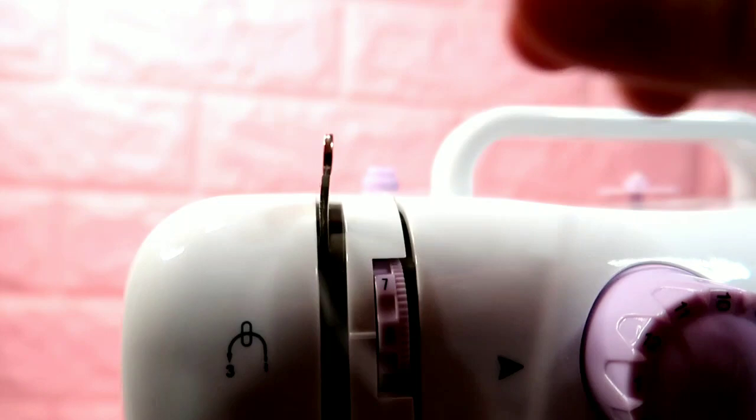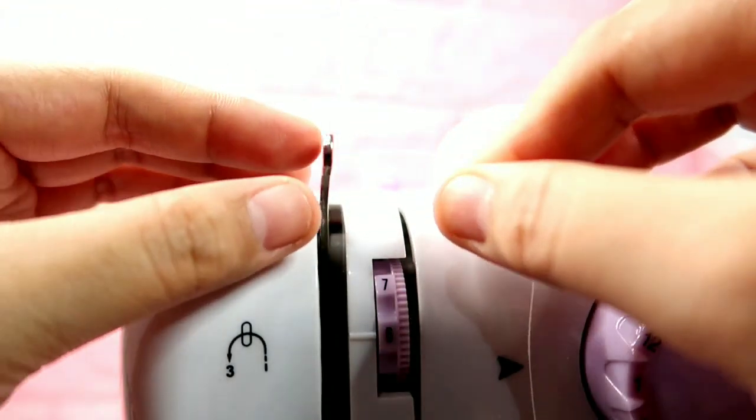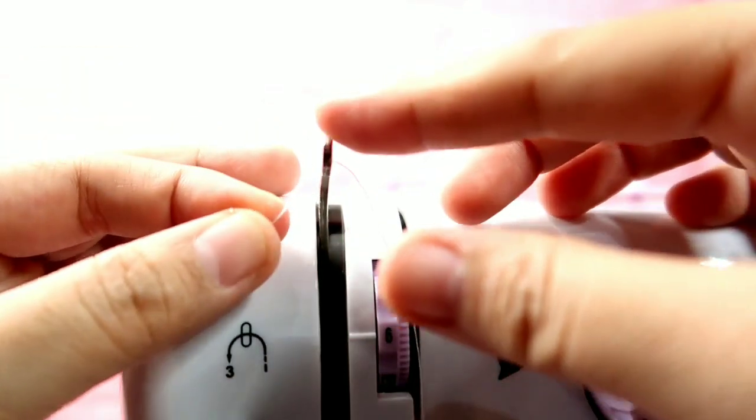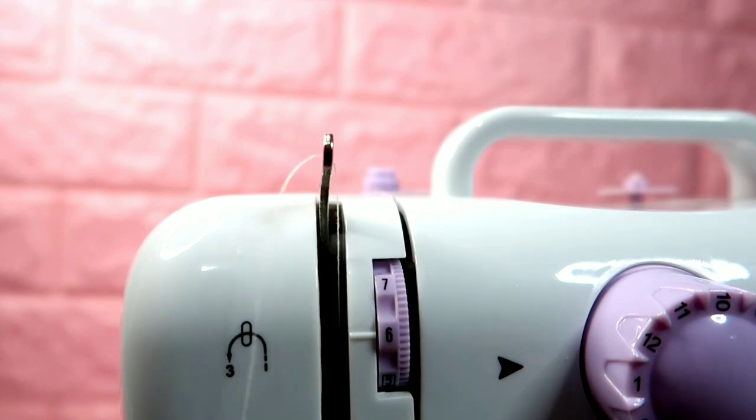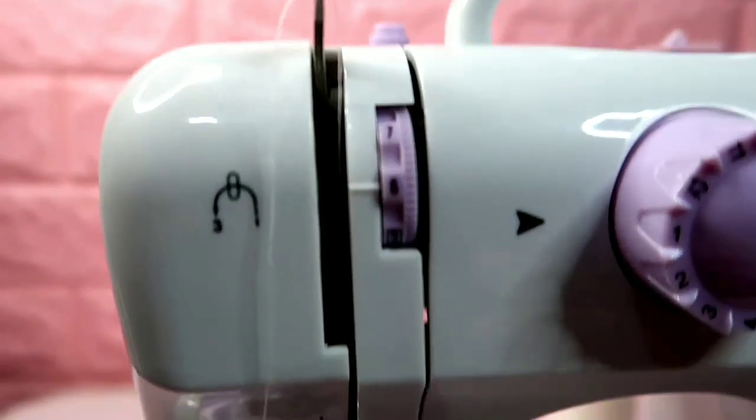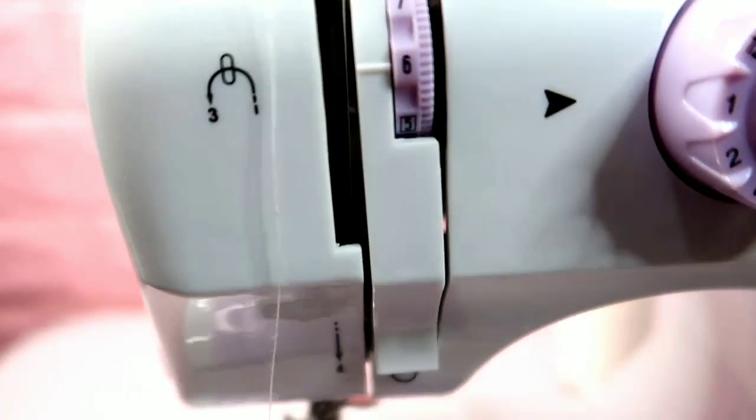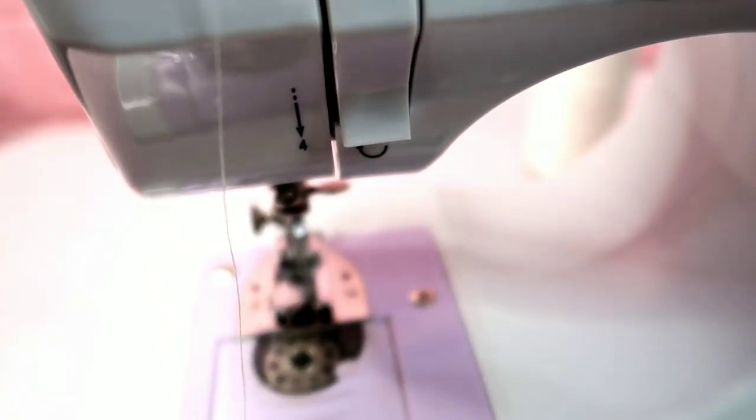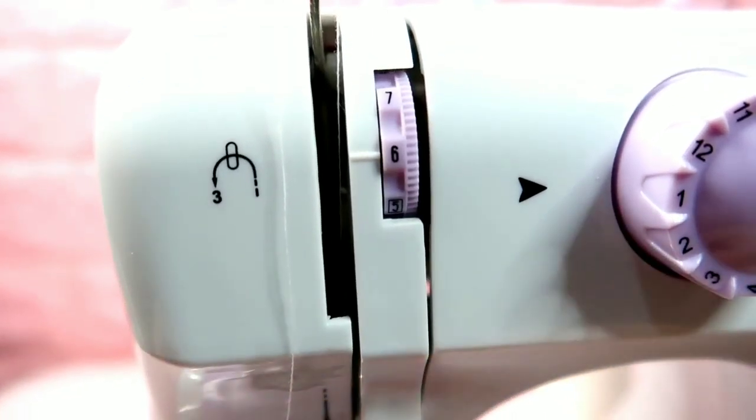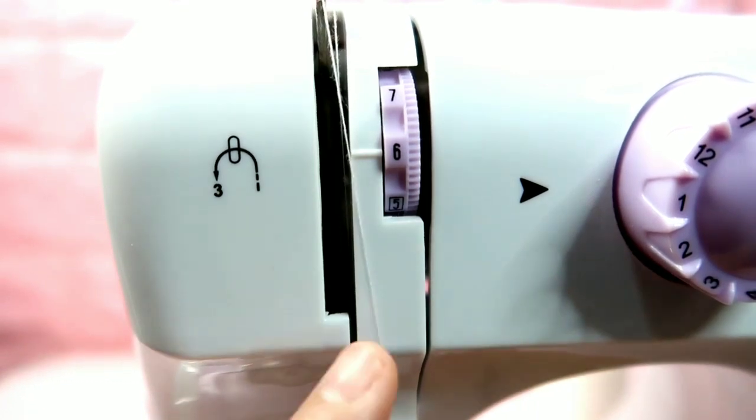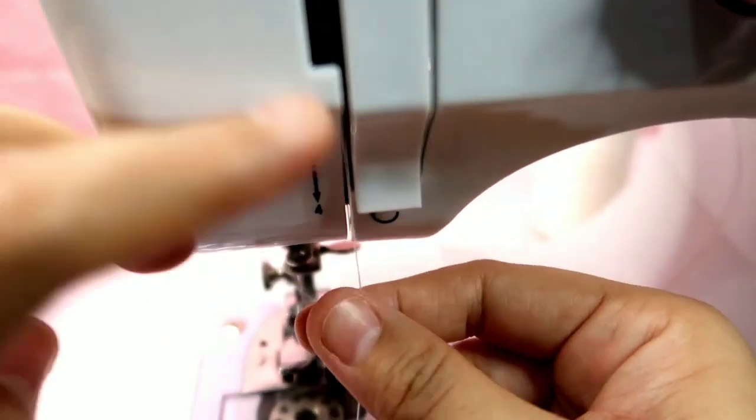Then you'll pass the thread through here where it moves every time you sew. That's number three, sorry earlier was number two. This part is number two, and then number three. Next, it will pass through the small opening here. You can see number four is marked here.